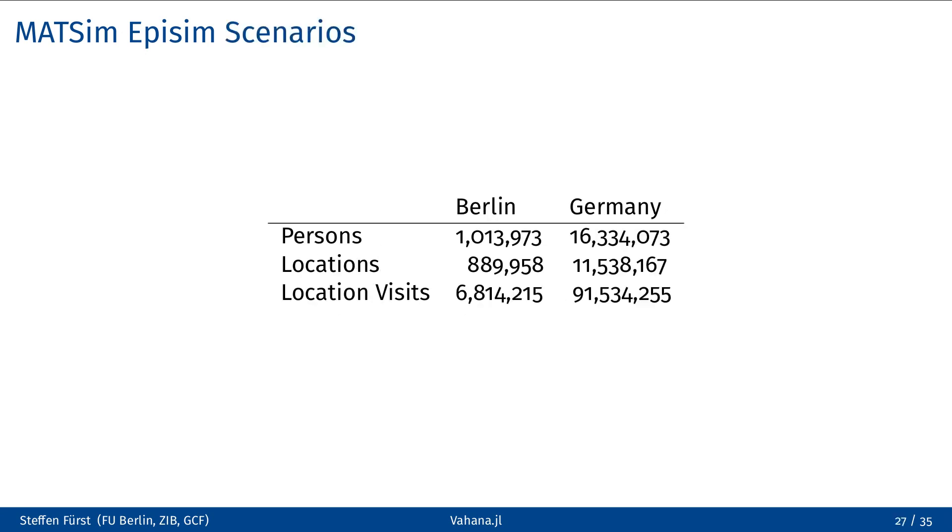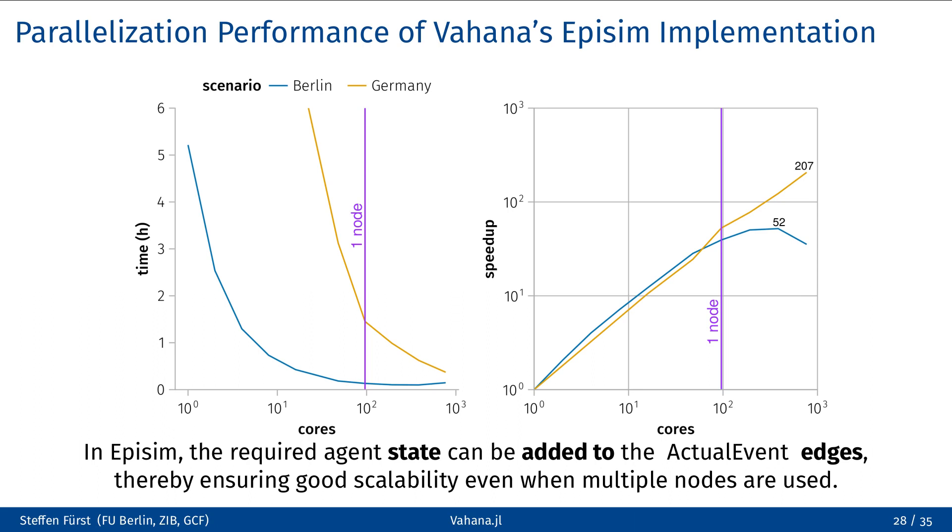Two different scenarios were used to evaluate the scalability. The first scenario represents the Berlin area, featuring around 1 million agents that are standing for the 4 million persons living in Berlin. There are also nearly 1 million locations. In the course of a single simulated day, without any policy interventions, these agents change the locations about 7 million times. The second scenario represents the whole of Germany. Here, about 16 million agents are used to represent the population. There are about 12 million locations. And in the course of a single simulated day, the agents change location about 90 million times. The run times shown in the following figures are for the simulation of 365 days.